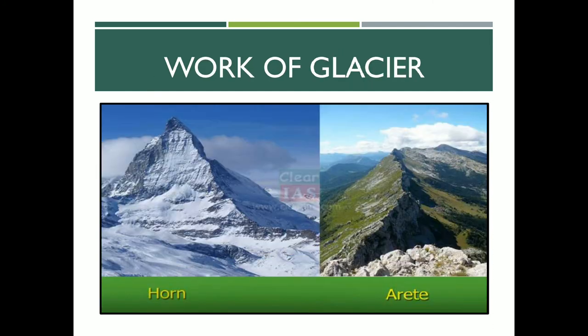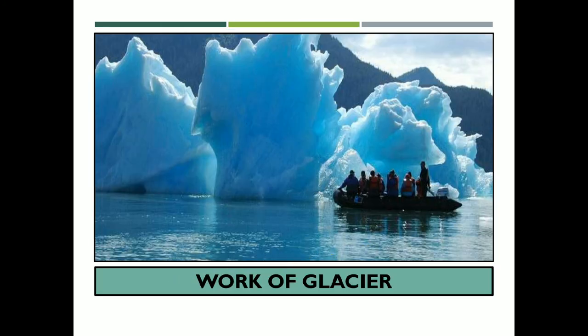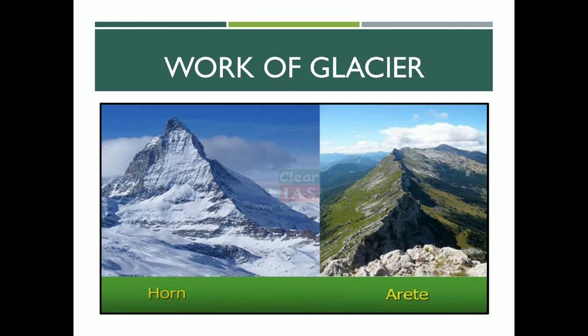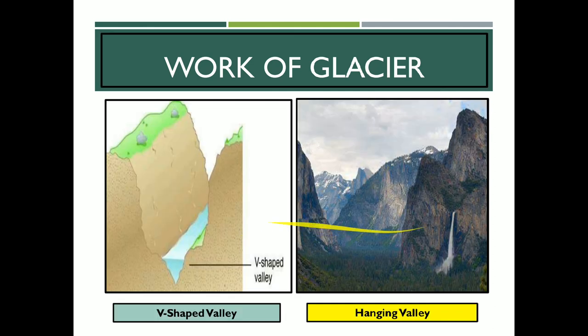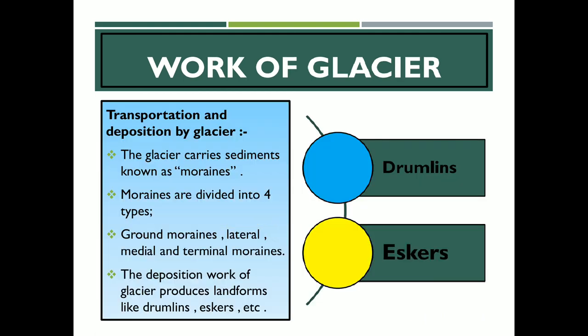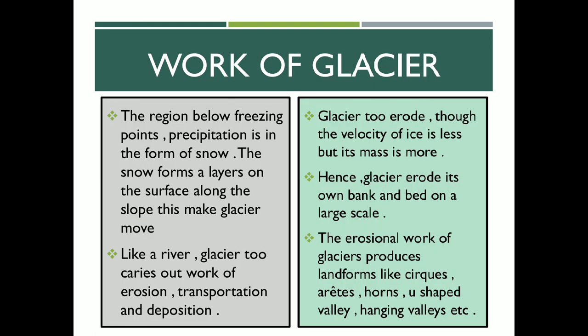So here we have covered the topic of the glacier as an agent of erosion. We have discussed the erosional work of a glacier, the transportation of a glacier, as well as the depositional work of a glacier. We have also learned about the different types of landforms — such as horn, arête, V-shaped valley, hanging valley, drumlins, eskers — all produced by the erosional and depositional work of a glacier.